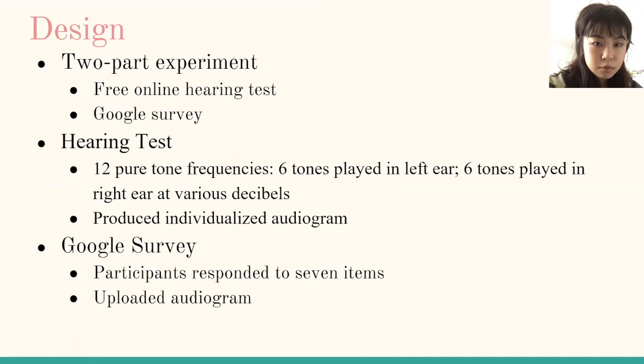The design has two parts. The first part is taking the free online hearing test provided by MD Hearing Aid. The hearing test itself consists of 12 pure tone frequencies — six tones tested in the left ear and six in the right — playing at various decibels and producing an individualized audiogram at the end. The second part is completing a Google survey where participants would upload their audiogram and answer seven questions.